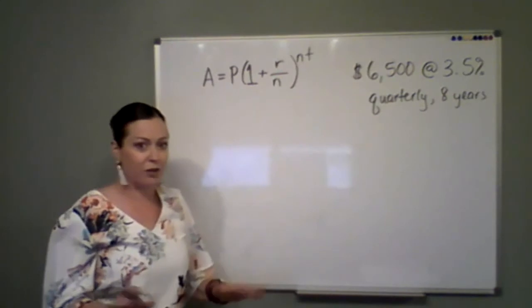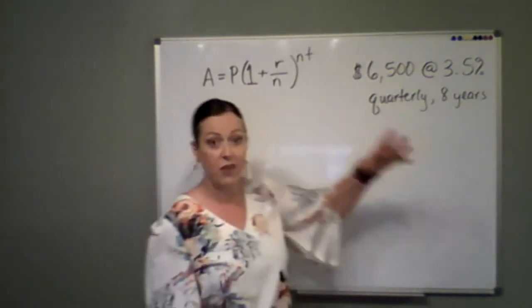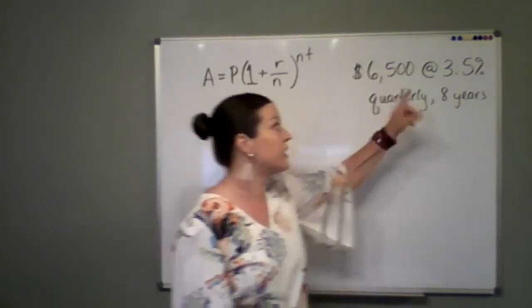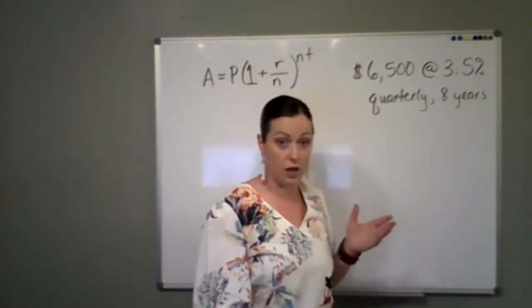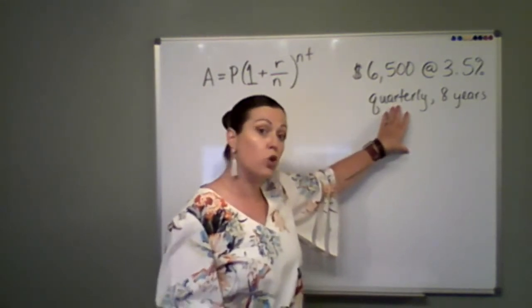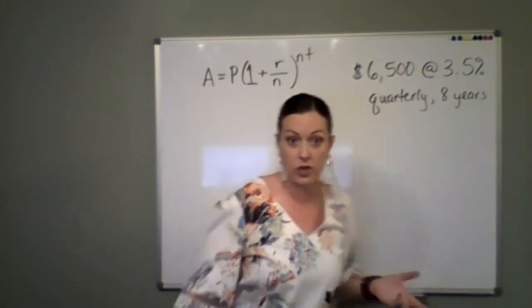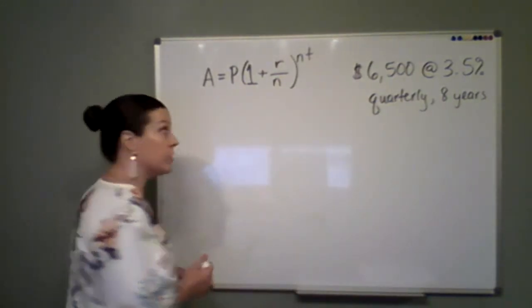Sounds kind of crazy. Let's plug in this example here. So if somebody invests $6,500 at three and a half percent interest, and it's compounded quarterly for eight years, what is their balance going to be? So I need to start plugging in my known values.